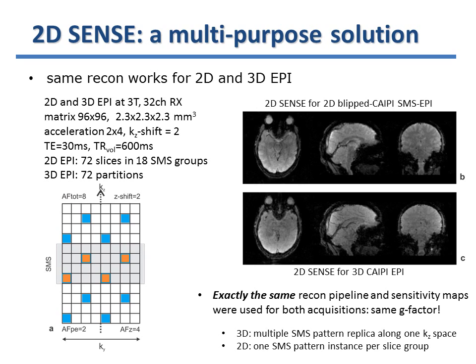Finally, we applied exactly the same reconstruction pipeline for blipped CAIPI EPI and volumetric 3D EPI. For matched field of view and CAIPI shift, the blipped CAIPI sampling pattern is a subset of the 3D EPI k-space coverage. This implies that exactly the same voxel locations fold onto each other, which yields identical g-factor maps for the volumetric and blipped CAIPI acquisitions. This demonstrates the flexibility of the 3D k-space-based representation of SMS sampling.